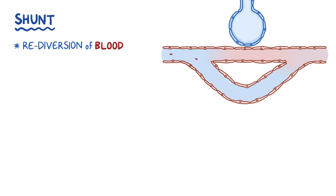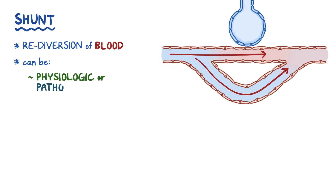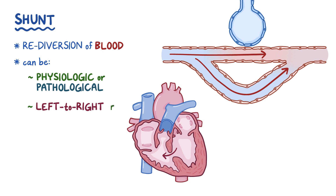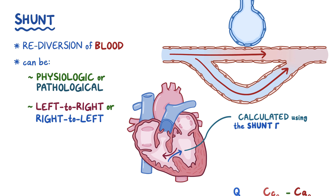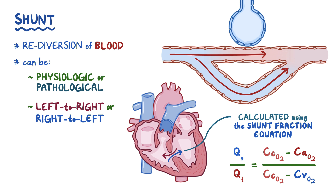As a quick recap, a shunt is a re-diversion of blood from its usual path through the pulmonary circulation. Shunts can be physiologic or pathologic. They can also result in a left-to-right or right-to-left diversion of blood across the heart. The amount of blood that flows through a right-to-left shunt can be calculated using the shunt fraction equation, which is based on oxygen content of the blood.